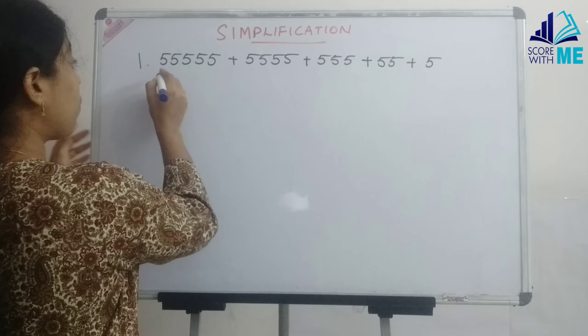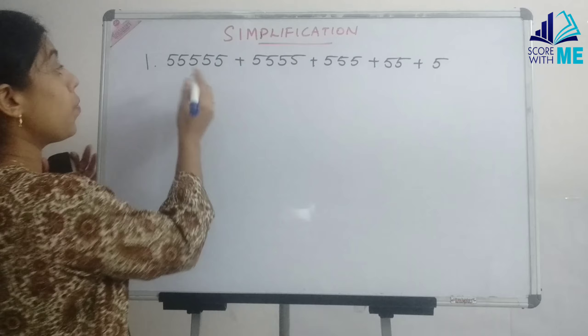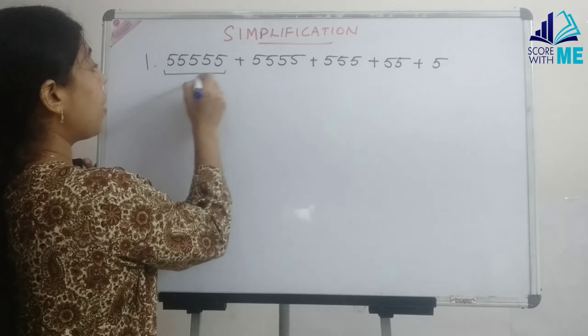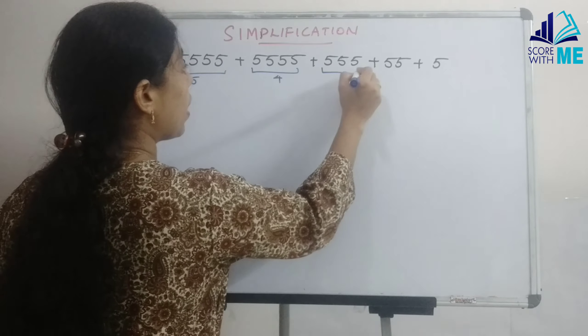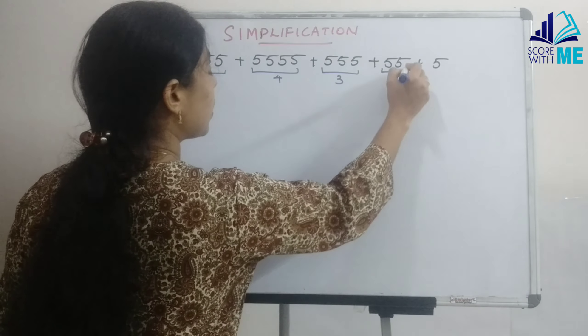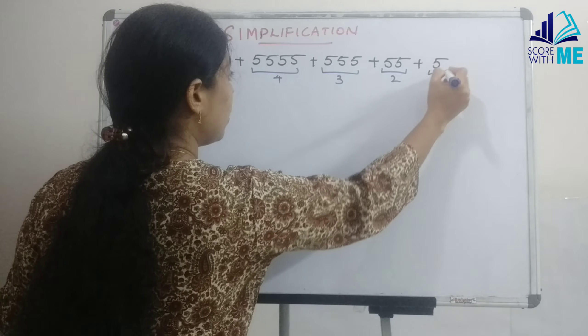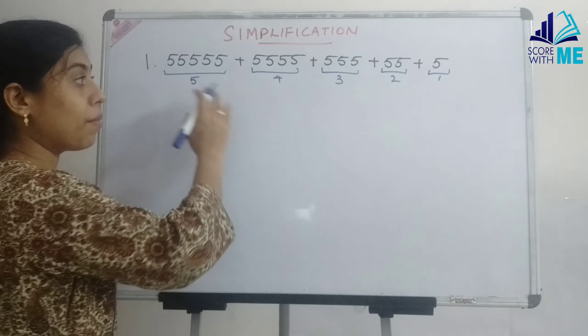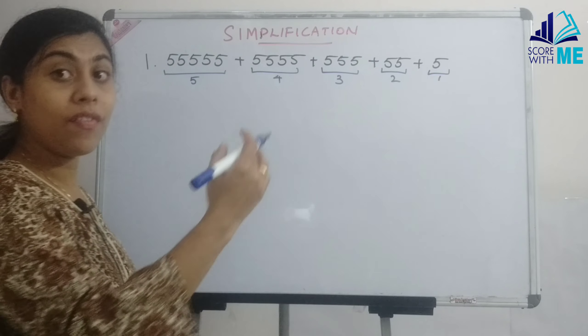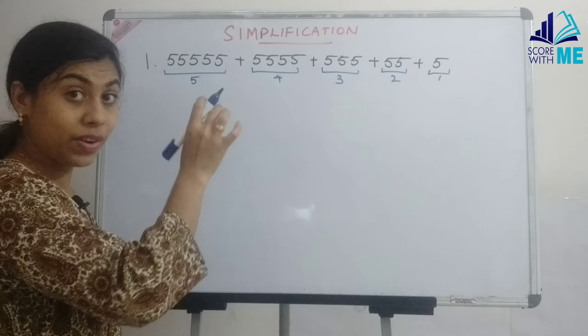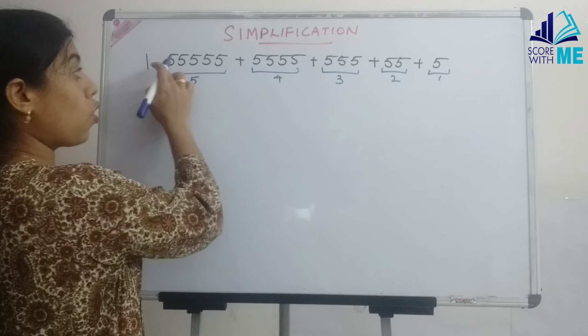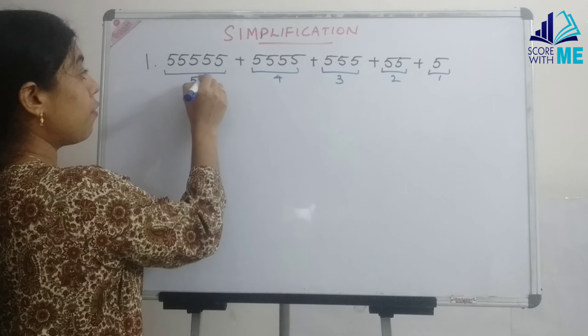So how many numbers of 5 have we got? Here we have got 5 number of 5s, here we have got 4 numbers, here we have got 3 number of 5s, here 2 number of 5 and here just 1 five. So we have got 5 number of 5.